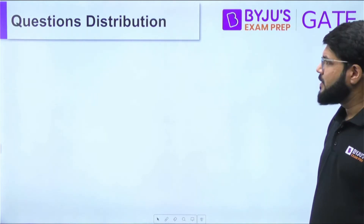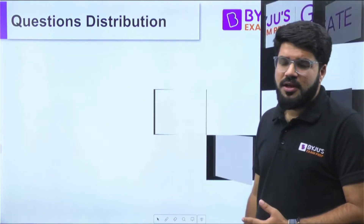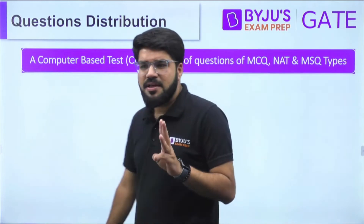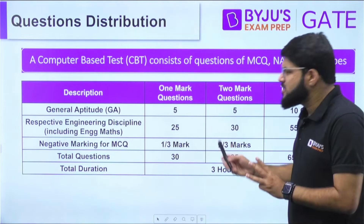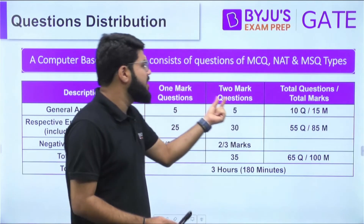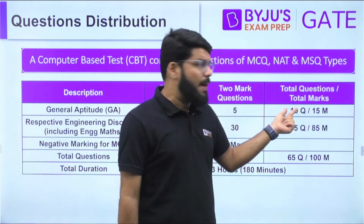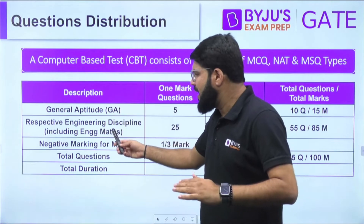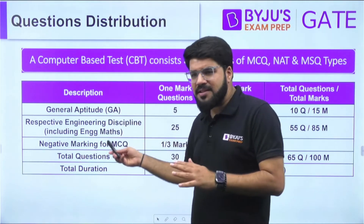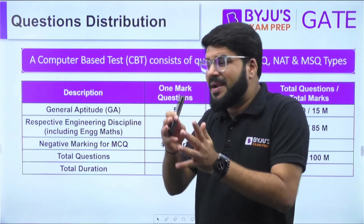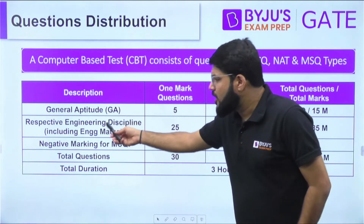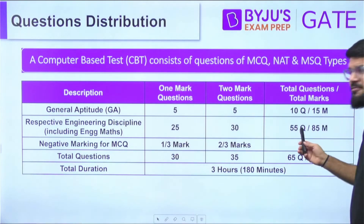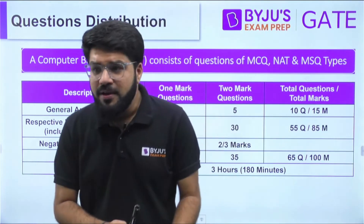Now let's talk about question distribution. It is a computer-based test with three types of questions: MCQ, NAT, and MSQ. General Aptitude carries 15 marks with five one-mark questions and five two-mark questions — total 10 questions out of 65. The technical part (including engineering maths) covers 85 marks: 25 questions of one mark and 30 questions of two marks, totaling 55 questions out of 65.